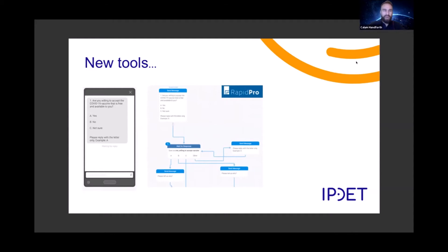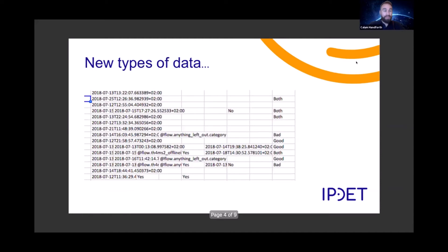All of these are creating new types of data. This is a snapshot of hundreds of thousands of variables from our chatbot that we built and piloted across five countries. So new types of data require new ways of analysis.